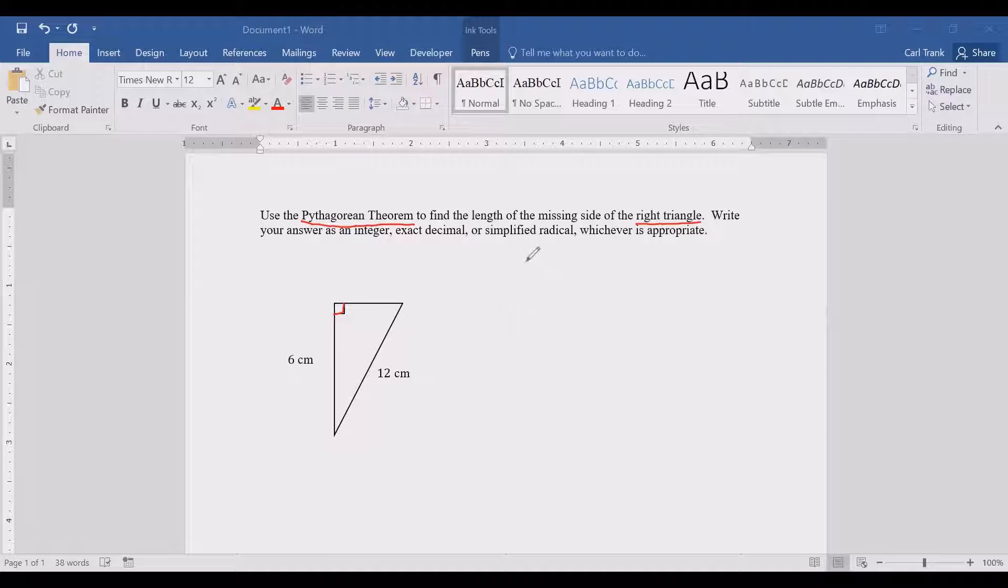The Pythagorean Theorem says that for any right triangle, A squared plus B squared equals C squared.